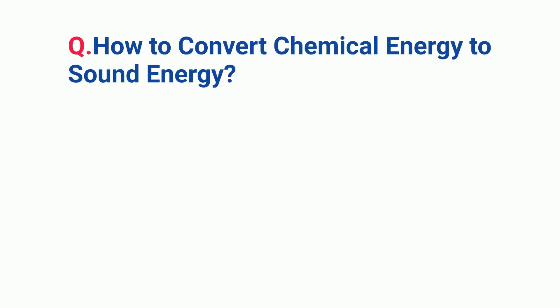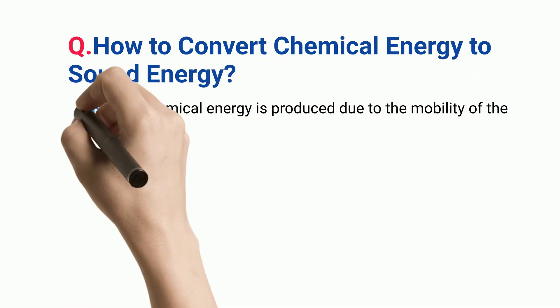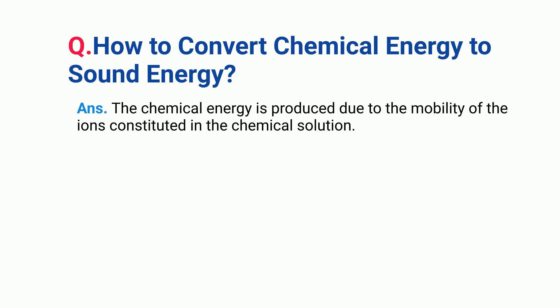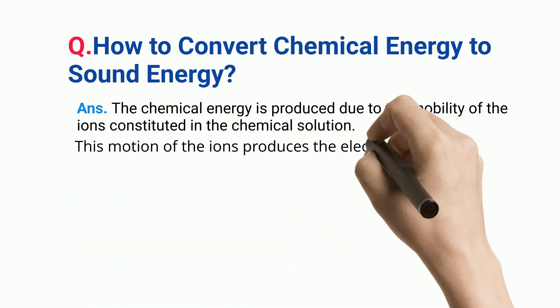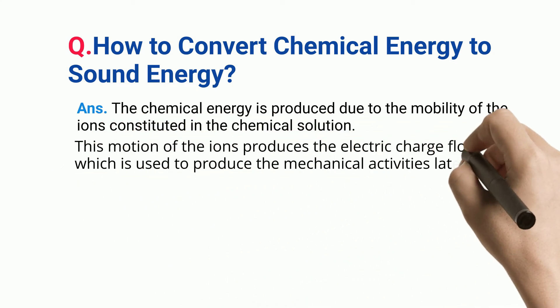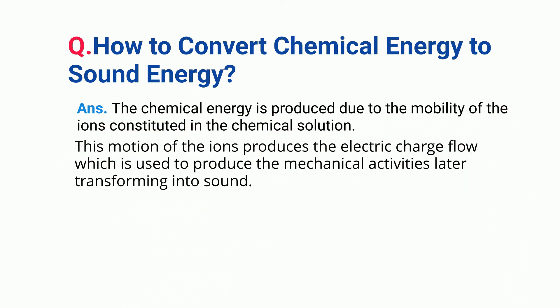How to convert chemical energy to sound energy: chemical energy is produced due to the mobility of ions in a chemical solution. This motion of ions produces electric charge flow, which is used to produce mechanical activities that later transform into sound.